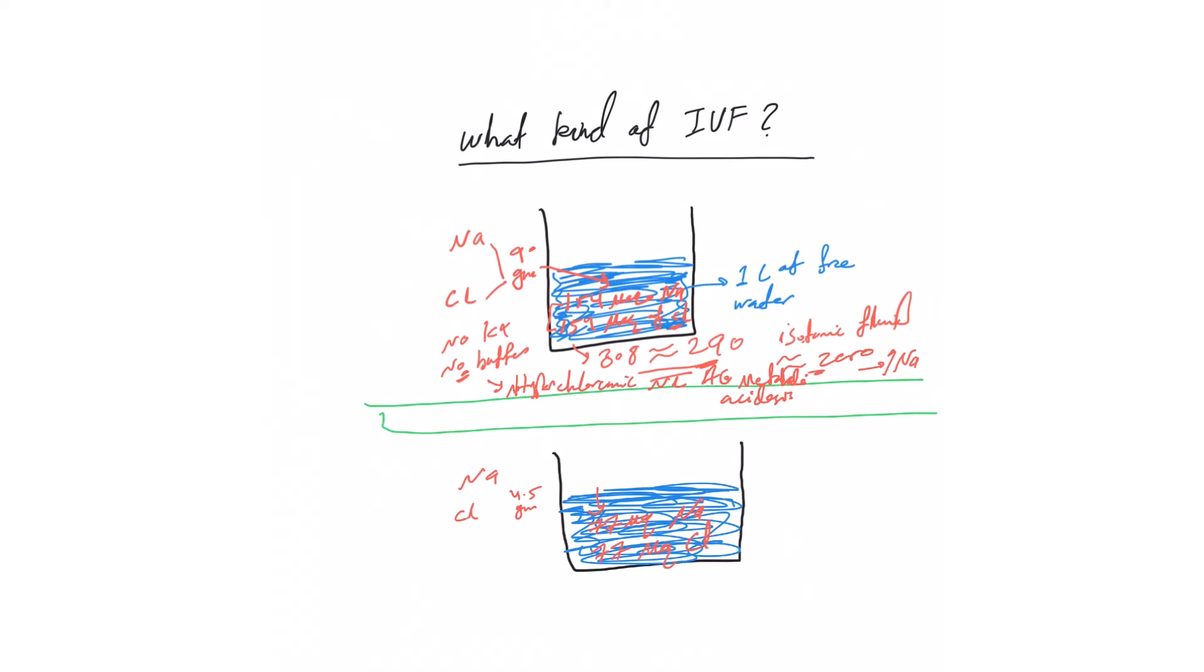The reason we called it 0.9 percent for normal saline is because we put 9 grams in one liter. This is exactly half of that, so this is why we call it half normal saline.